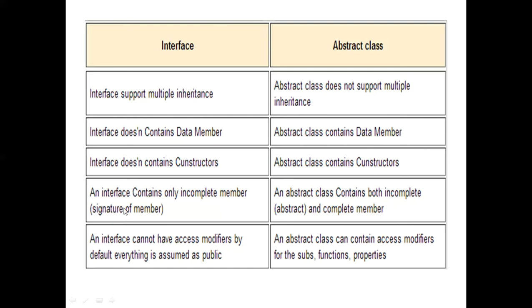You only declare the functions, you do not give their definition in the interface. So interface only contains incomplete members, you can say, without definition. While in abstract class both can be there, you can do declaration only by making an abstract function, and you can make a non-abstract function and give its definition.